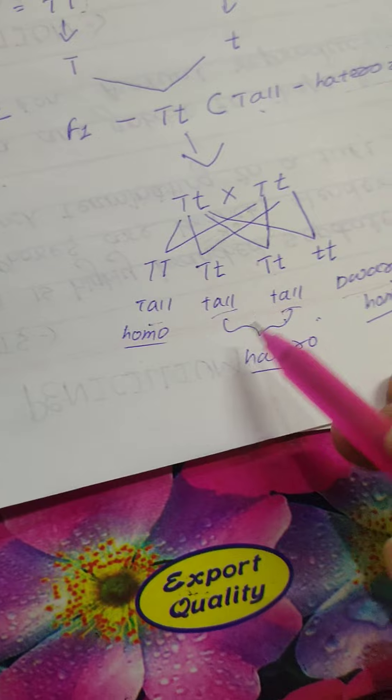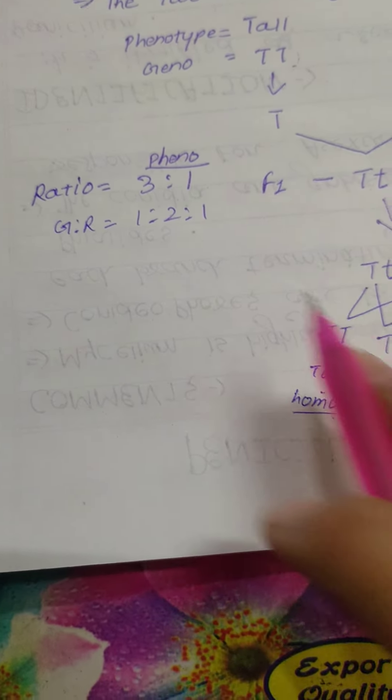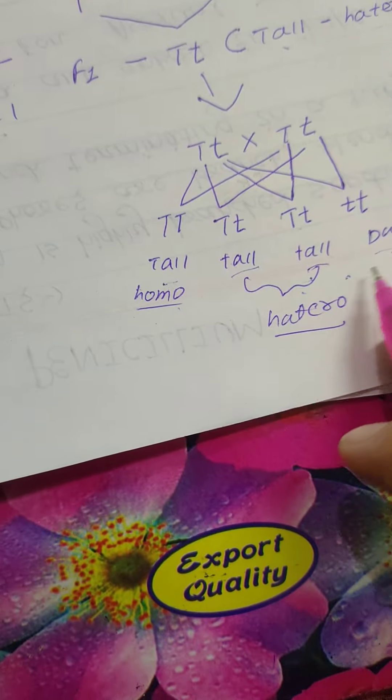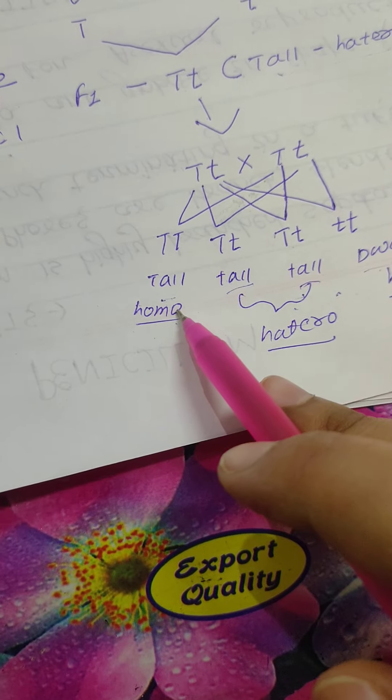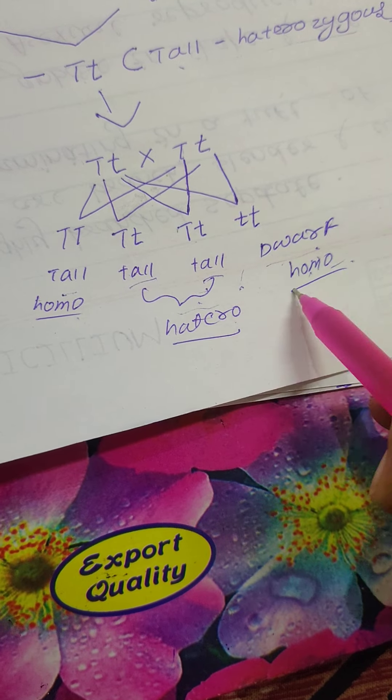And genotypic ratio is 1 is to 2 is to 1. How is it? Genotypic ratio 1 is to 2 is to 1. But how is it? Because here is a homozygous tall, 2 heterozygous tall and 1 homozygous dwarf. Clear?